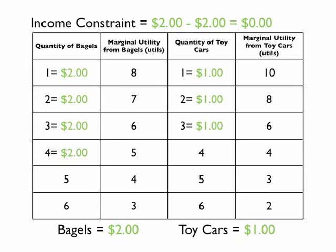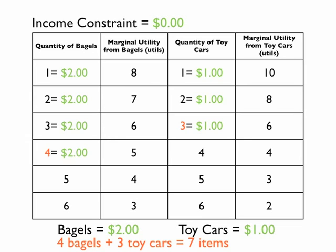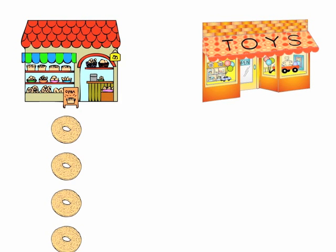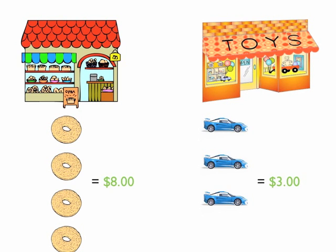You purchased a total of four bagels and three toy cars with that $11 — a total of seven items. You purchased four bagels at $8 and three toy cars at $3. But did you maximize your utility? The answer is no, and here is why.